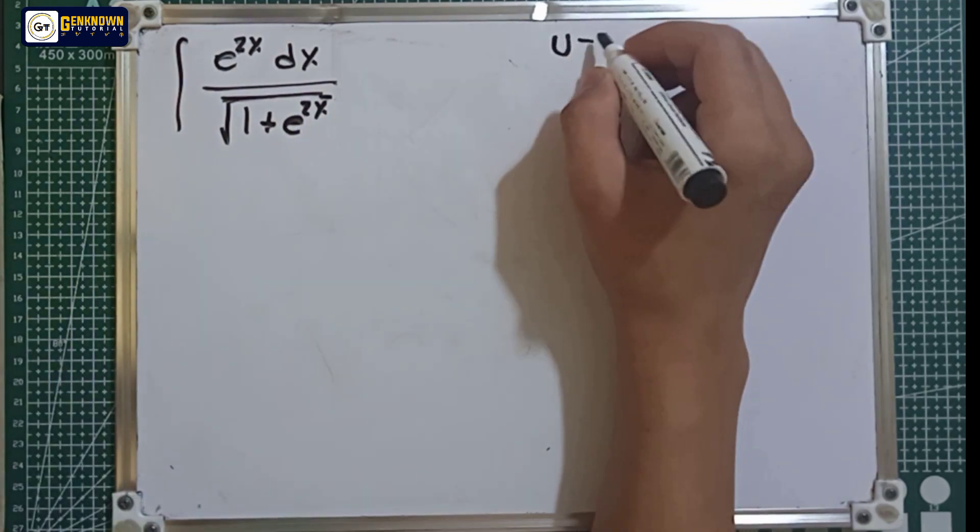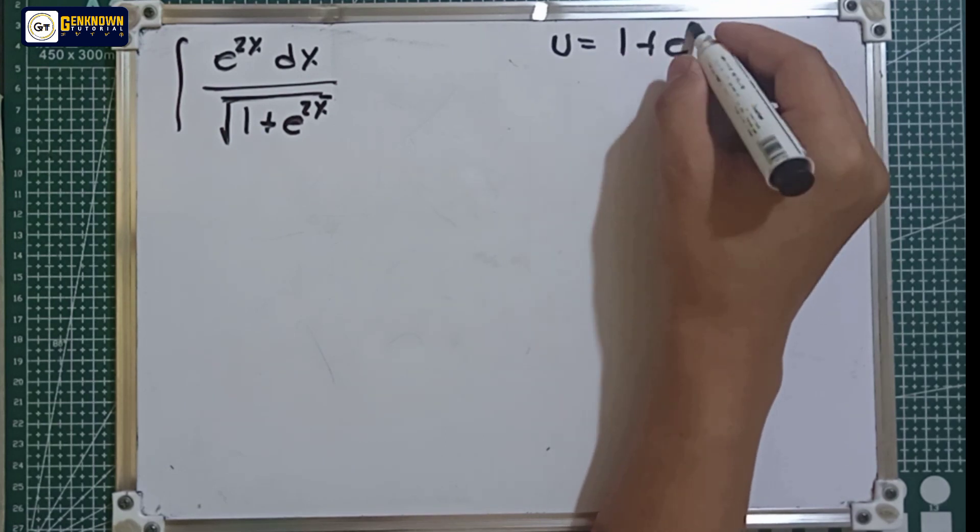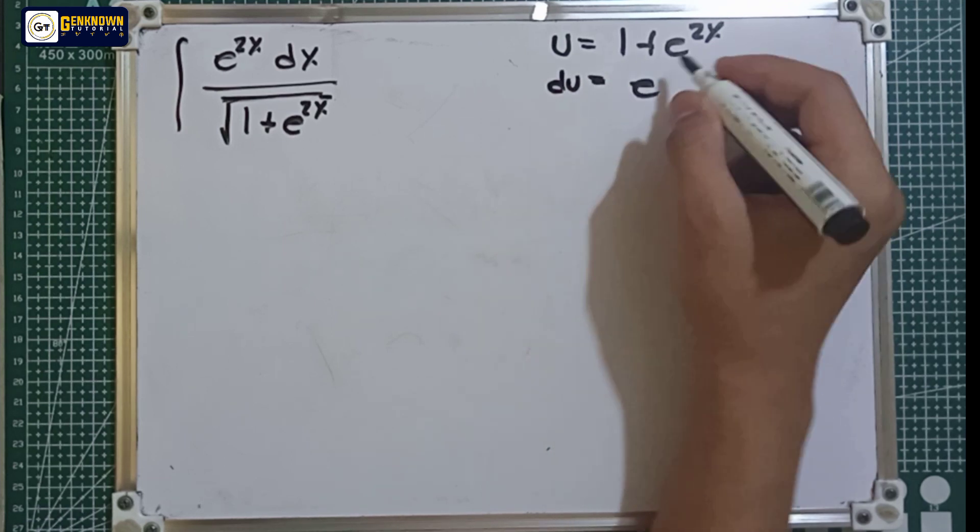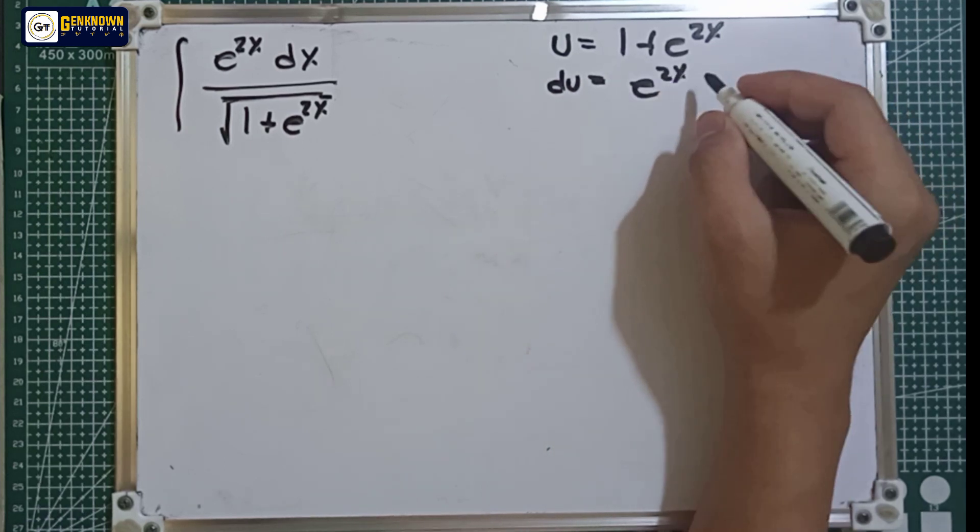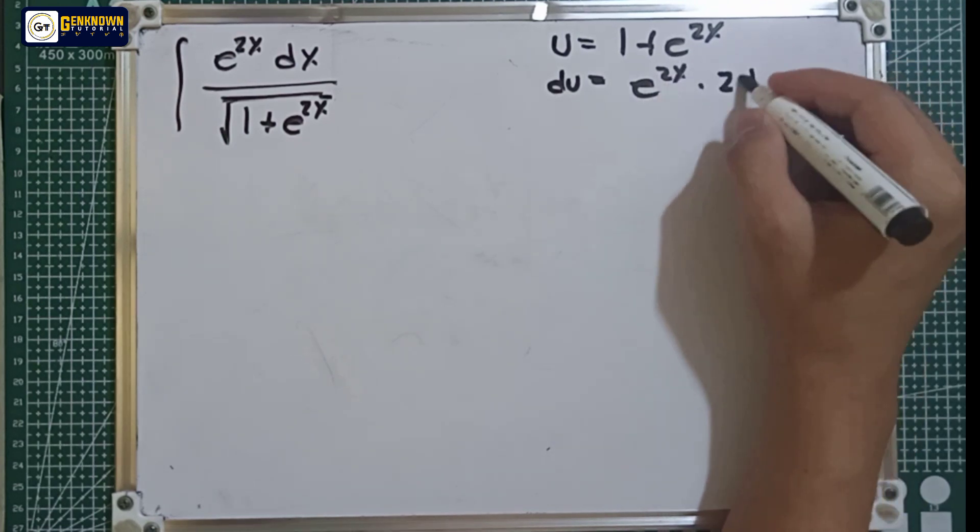u is equal to the denominator except the root. So 1 plus e raised to 2x. Derived, du is equal to e raised to 2x multiplied by the derivative of 2x ay 2dx.